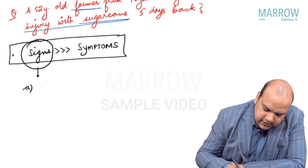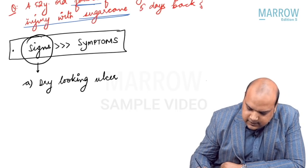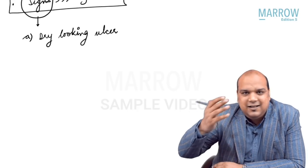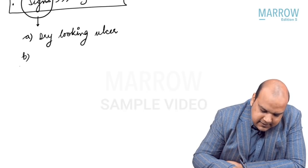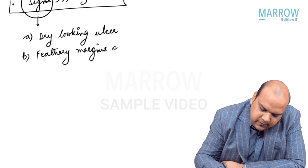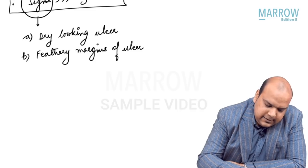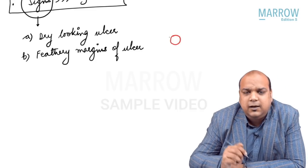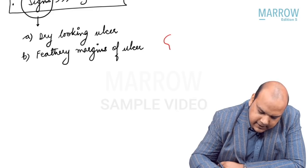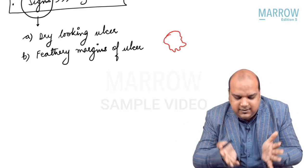The first sign is a dry-looking ulcer — this is something you understand with experience, whether the ulcer is dry looking or wet and glistening. The second sign is feathery margins of the ulcer. One ulcer can be completely circumscribed with smooth edges, but in cases of fungi the ulcer has irregular margins which look like the feathers of a bird — feathery margins.